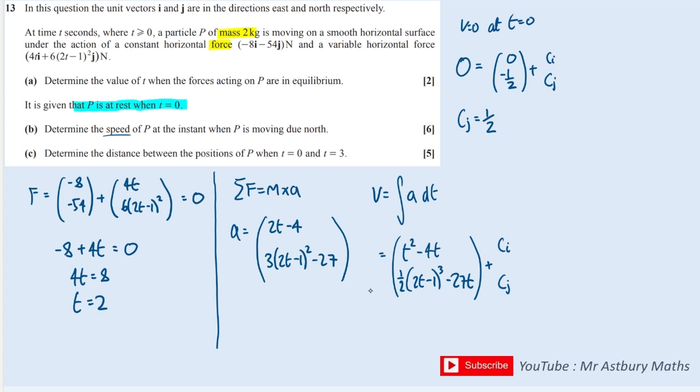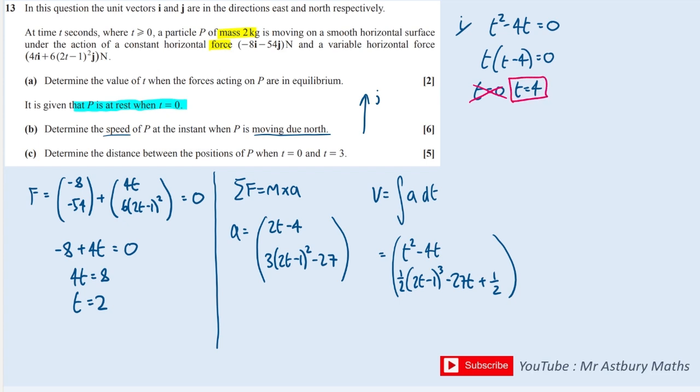So now I can have a full equation for my velocity. I'll just replace the ci with 0 and the cj with a half. Now I need to work out when it's moving due north. When it's moving due north, it has a j component of velocity, but there is no i component. So the i component, T squared minus 4T, must equal 0. Factorizing, I get T equals 0 and T equals 4. T equals 0 is when it's at rest, so it must be T equal to 4.